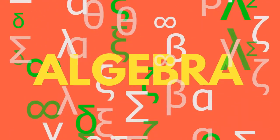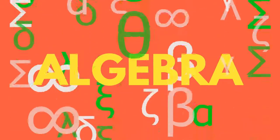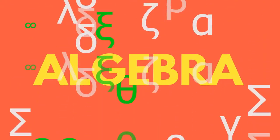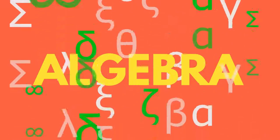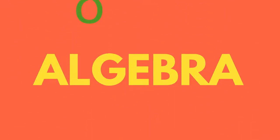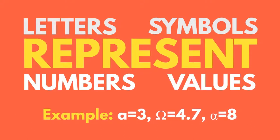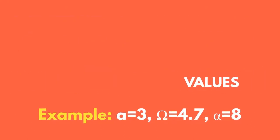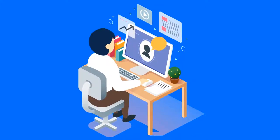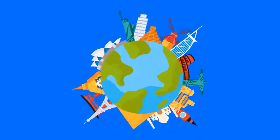Algebra is found everywhere we look. It is simply a code to follow for maths. Algebra uses letters and symbols as abbreviations to represent numbers and values. The concepts of algebra can be seen everywhere, from computer programming to building design.